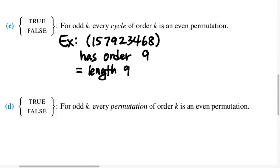And its length is the same thing as its order. And so is this cycle an even permutation? How do we know? Right, we can write it as a product of eight transpositions.